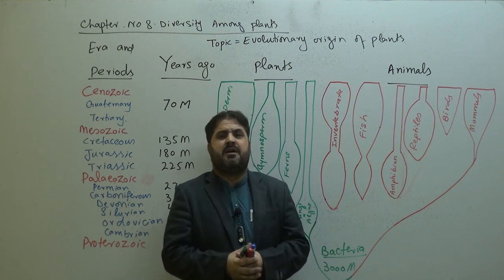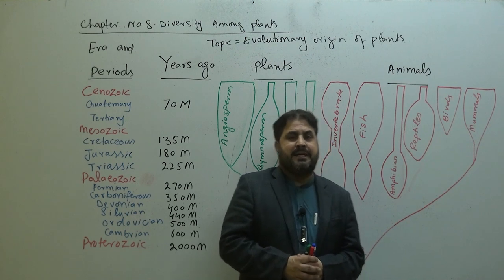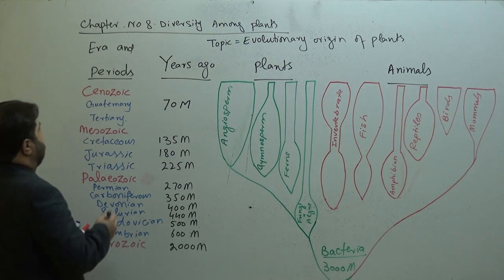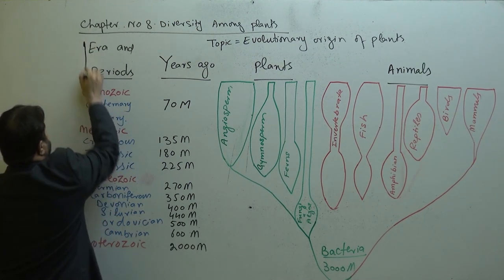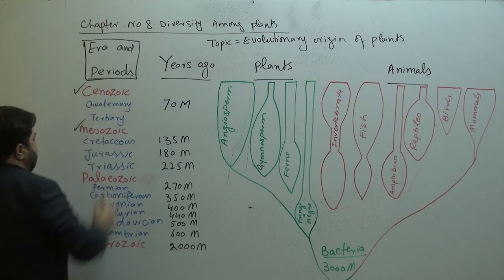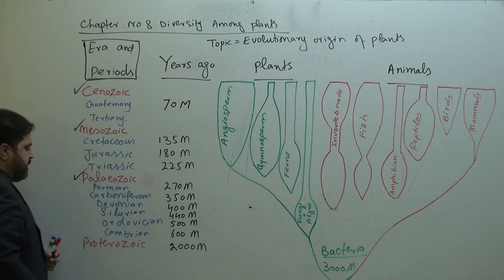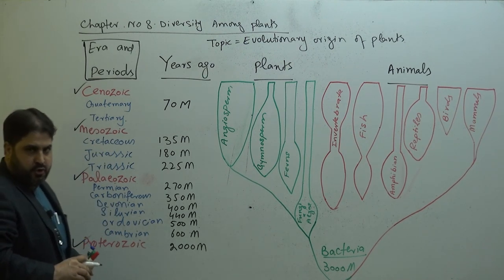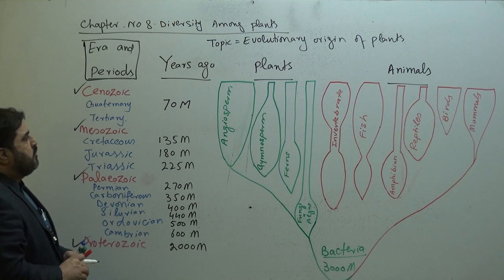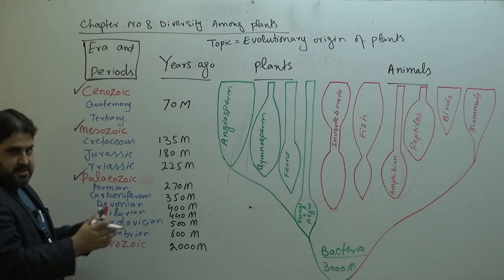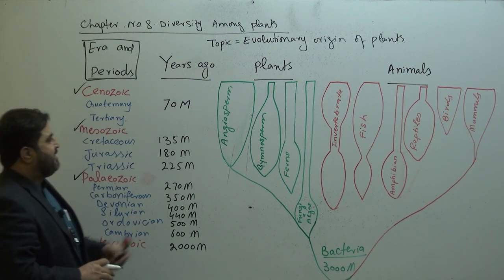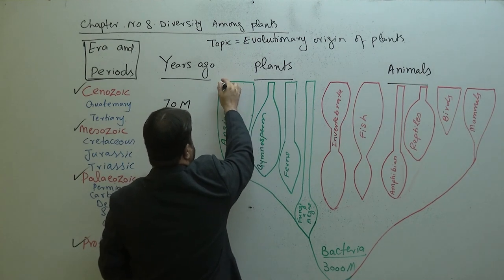Next we are going to discuss the evolutionary origin of plants. We have divided different eras, also called periods: Cenozoic, Mesozoic, Paleozoic, and Proterozoic. In the Cenozoic era, about 70 million years ago, angiosperms are dominant during this era.